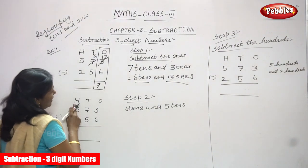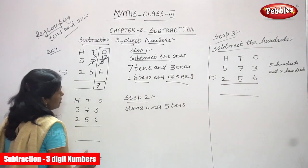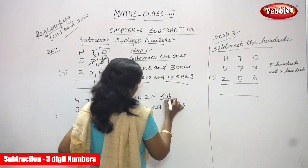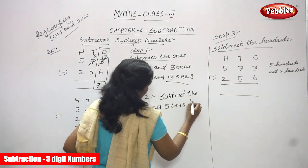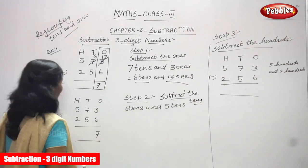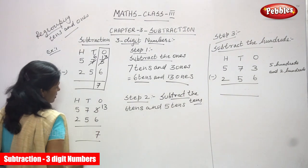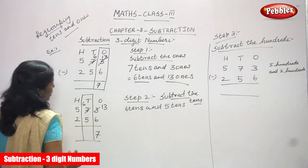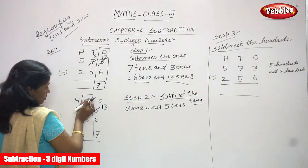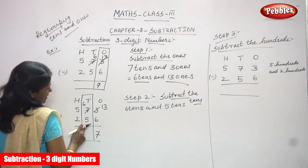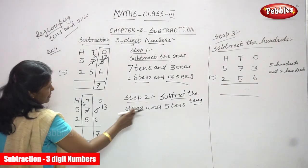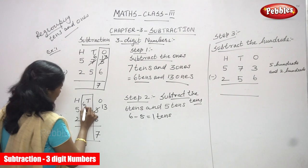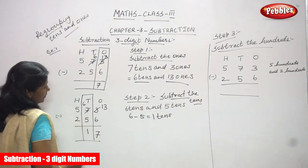Now I am going to do step 2. Again, the same 573 minus 256. Write the same answer — that is 7 ones. Now step 2: subtract the 10s. This 3 ones has become 13 and this 7 tens has become 6 tens already, as written in step 1. Now, focusing on the 10s place: what are the numbers in the 10s place? 6 tens and 5 tens. I am going to subtract: 6 minus 5 equals 1 ten. So write 1 here.